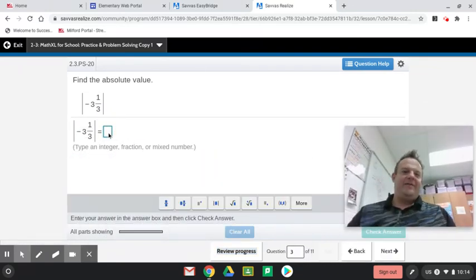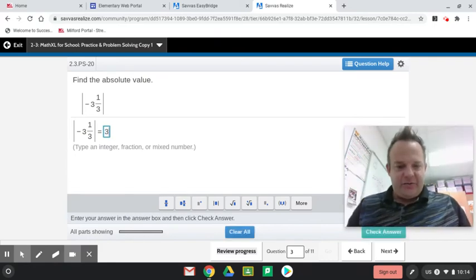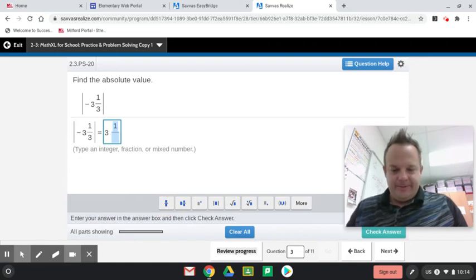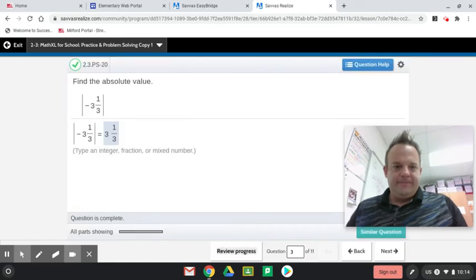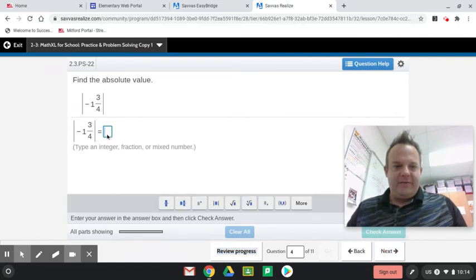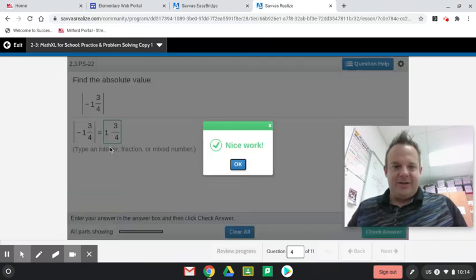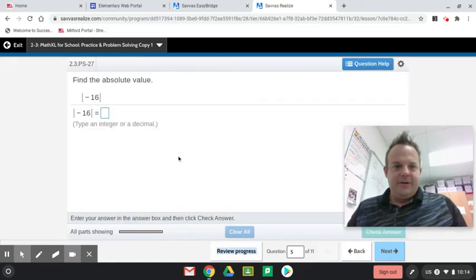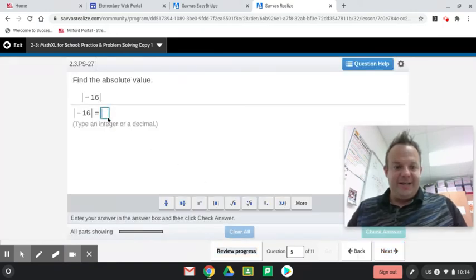Now, the absolute value of negative 3 and 1 third is just 3 and 1 third. Absolute value of negative 1 and 3 fourths is 1 and 3 fourths. I'm hitting backslash there as a little shortcut, so I don't have to hit the tools. Absolute value of negative 16 is 16.